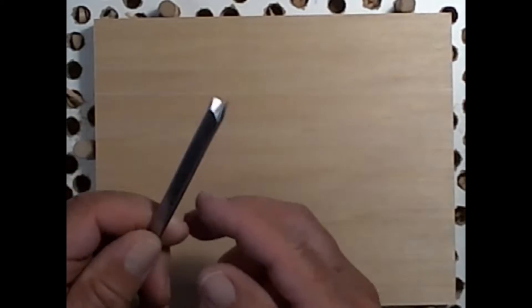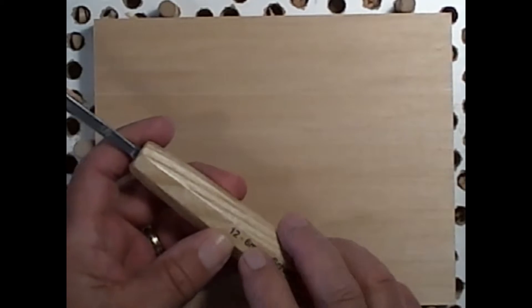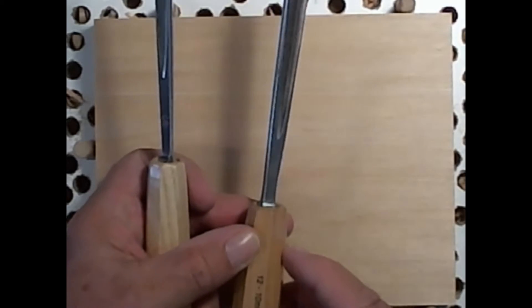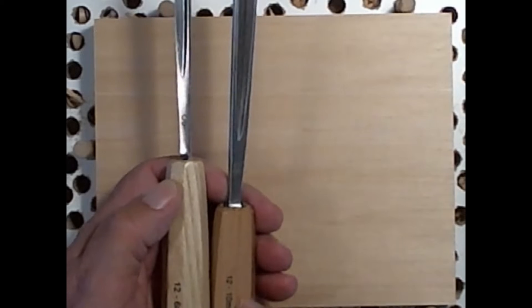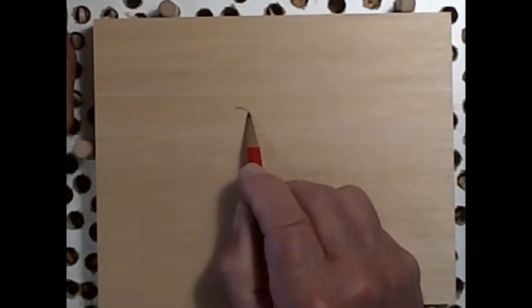Chase carving is typically done with the v-tool. The 12-piece set has a number 12 v-tool, six millimeter wide. And the seven-piece set has number 12, 10 millimeter. I'm going to use the larger one. Chase carving is just simply taking the v-tool and doing a design.